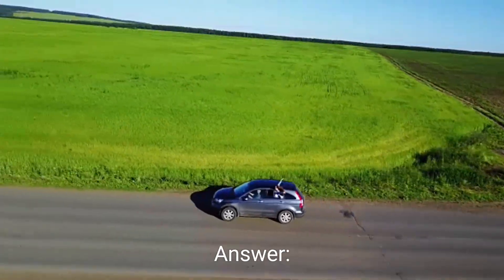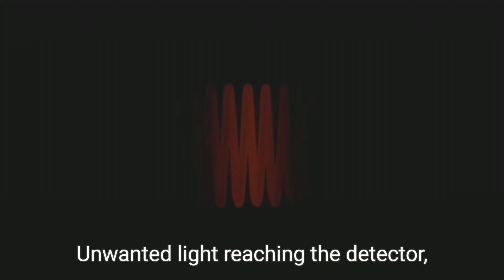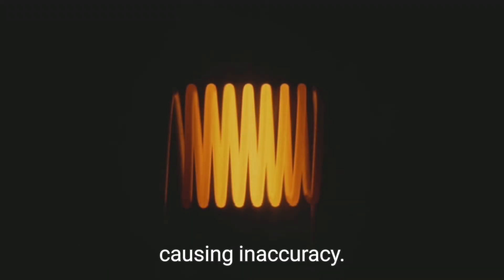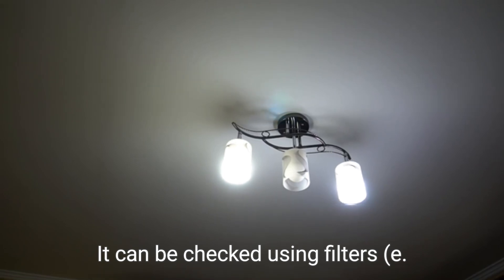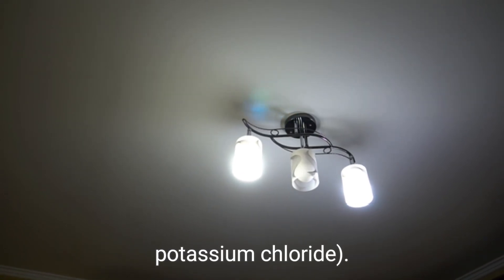What is stray light? Unwanted light reaching the detector, causing inaccuracy. It can be checked using filters, e.g., potassium chloride.